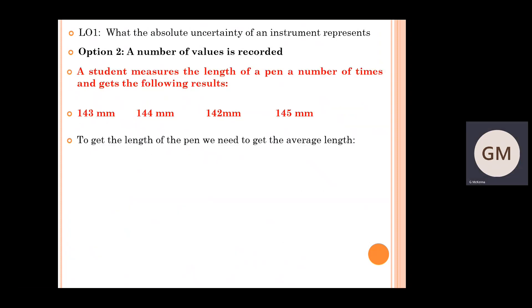The technique involved: first, we simply work out the average length, which is all your values added together divided by the total number of values. In this case, that gives us 143.5 millimetres.